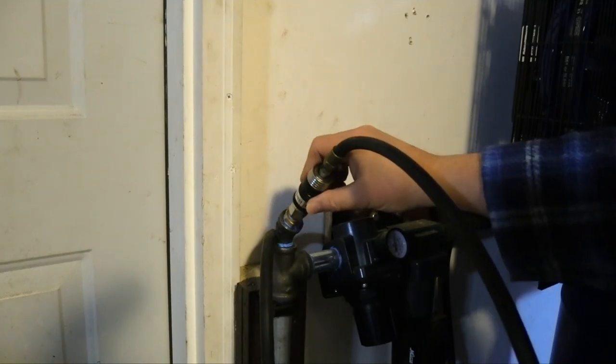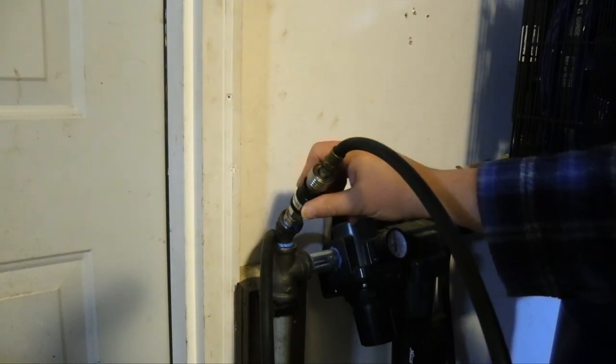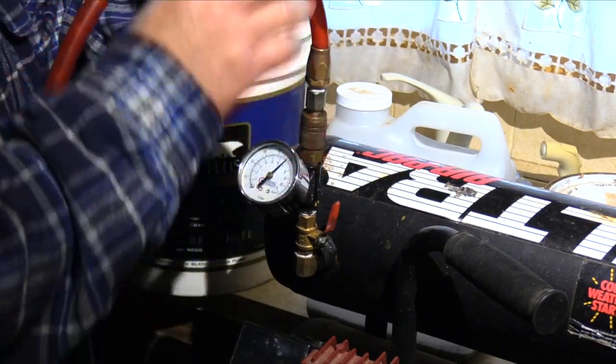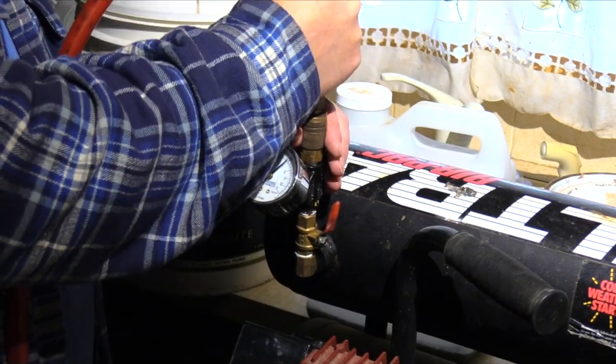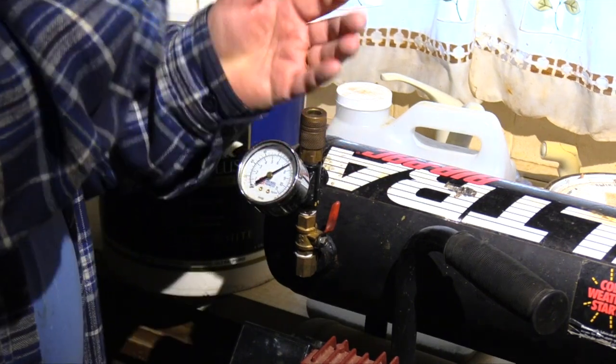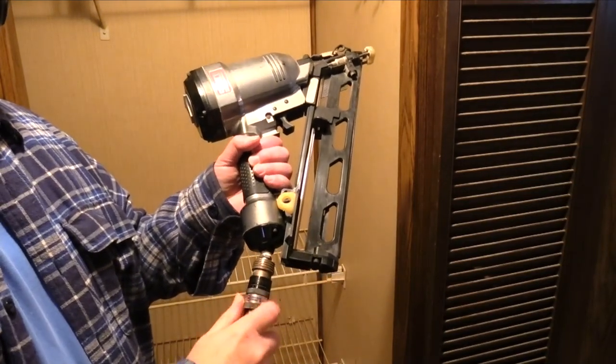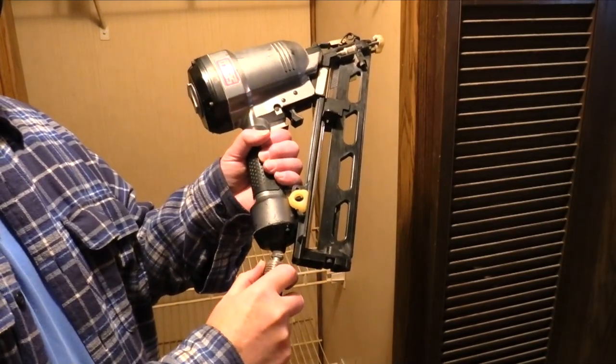This Milton air chuck has a relief valve that can be used to safely bleed off air pressure prior to removing the hose. Extra care must be taken with ordinary air chucks when disconnecting the hose to prevent it from whipping uncontrollably like a loose balloon. A safety chuck allows for easy one-handed operation.